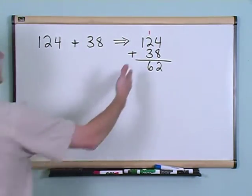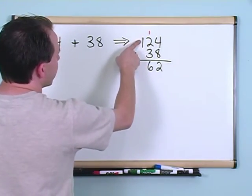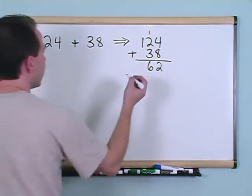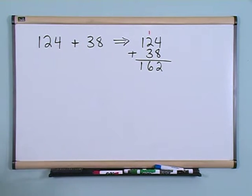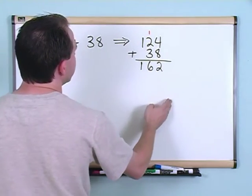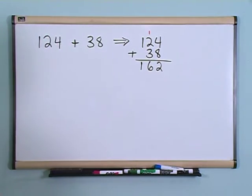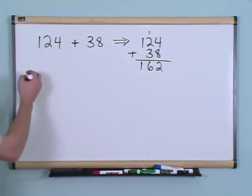Now I'm done with that. Now I just move to the left and say one plus zero, just like before, gives me one. So the answer is 162. It looks like a harder problem but it really isn't. There's just one more column to deal with. And it's the same rules as before.